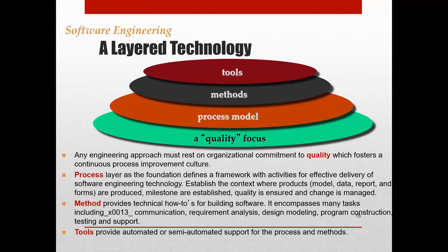Now let's look at software engineering and layered technology. The layers are: quality focus (shown in green), process models, methods, and tools. An engineering approach must rest on an organizational commitment to quality, which fosters a continuous process improvement culture. The quality focus layer is about maintaining quality, maintenance, and security when delivering software to an organization.